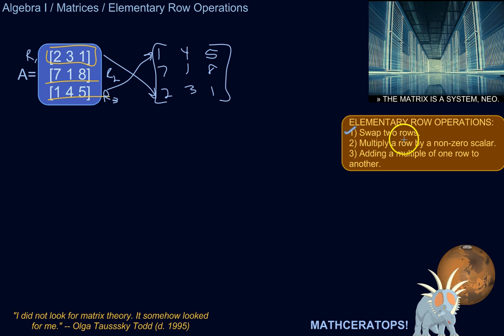We can multiply a row by a non-zero scalar. You're not allowed to multiply by zero. That kind of ruins things, but anything else is fine. Multiply a row by a non-zero scalar. So let's multiply row two by three, let's say.